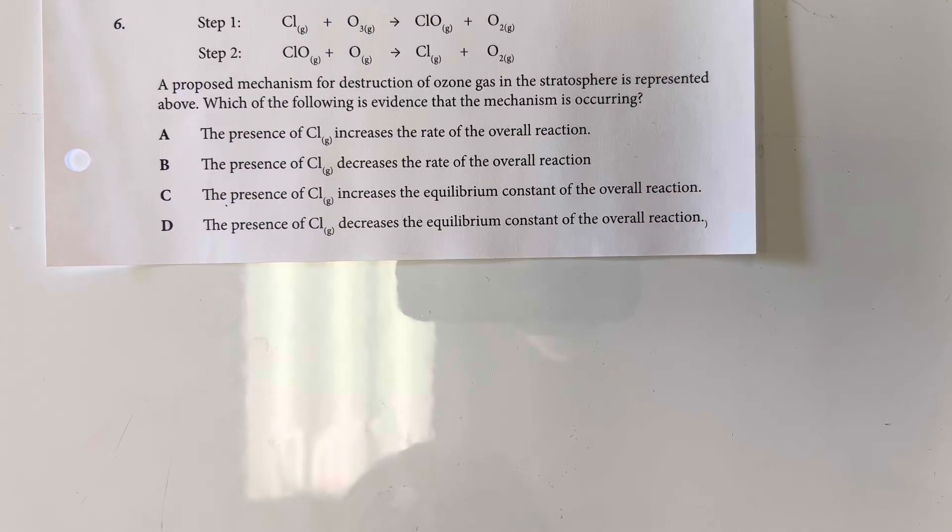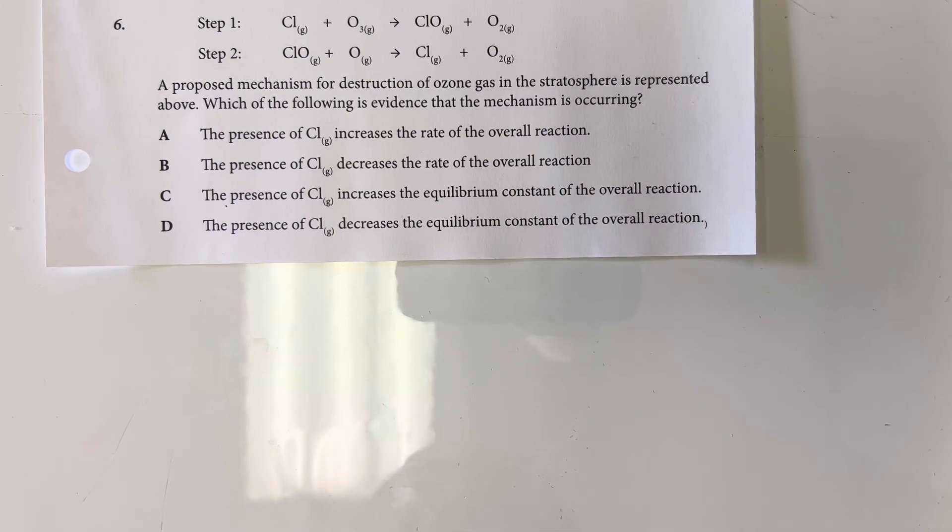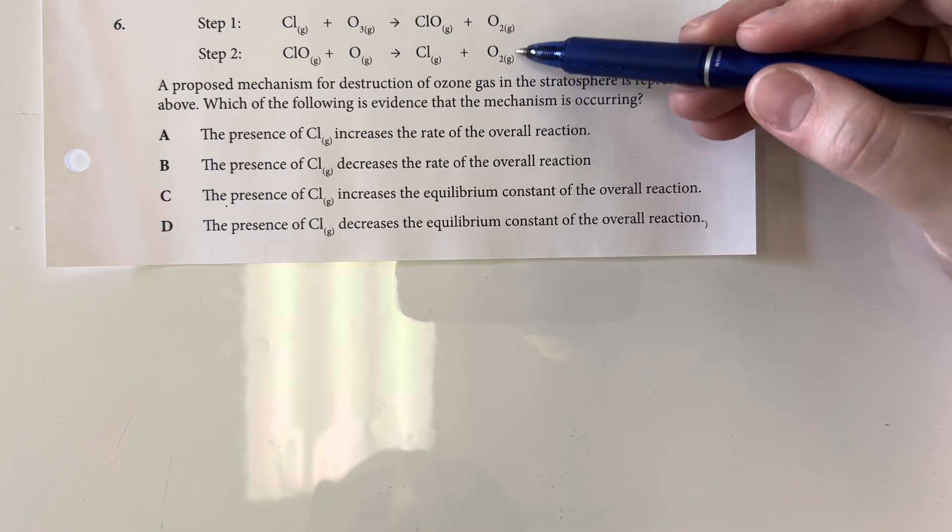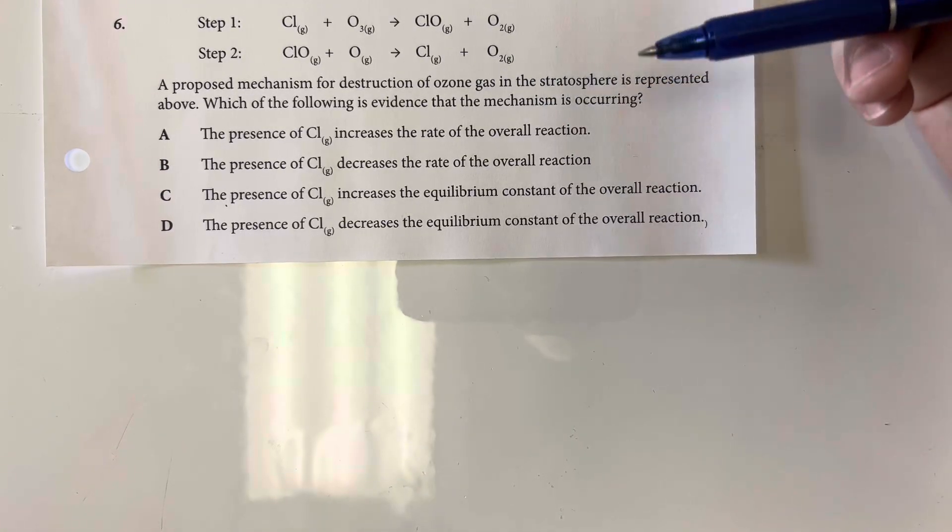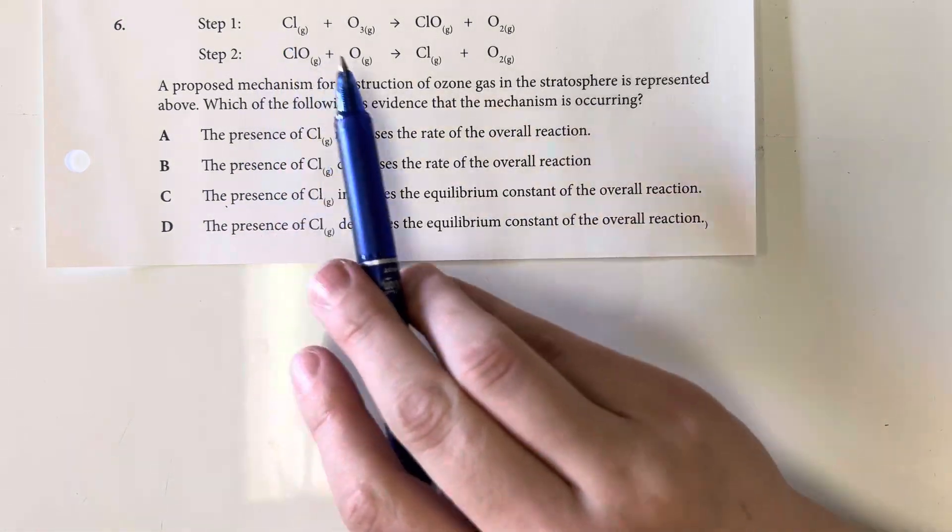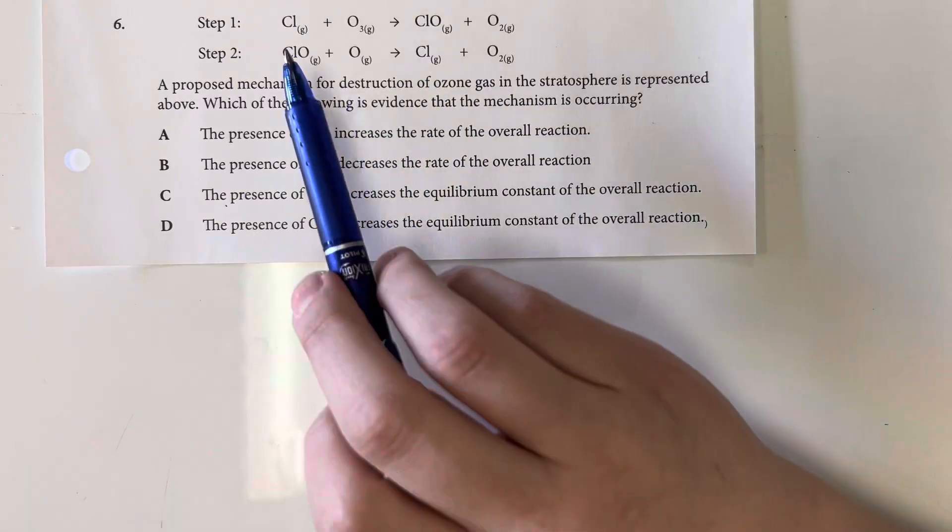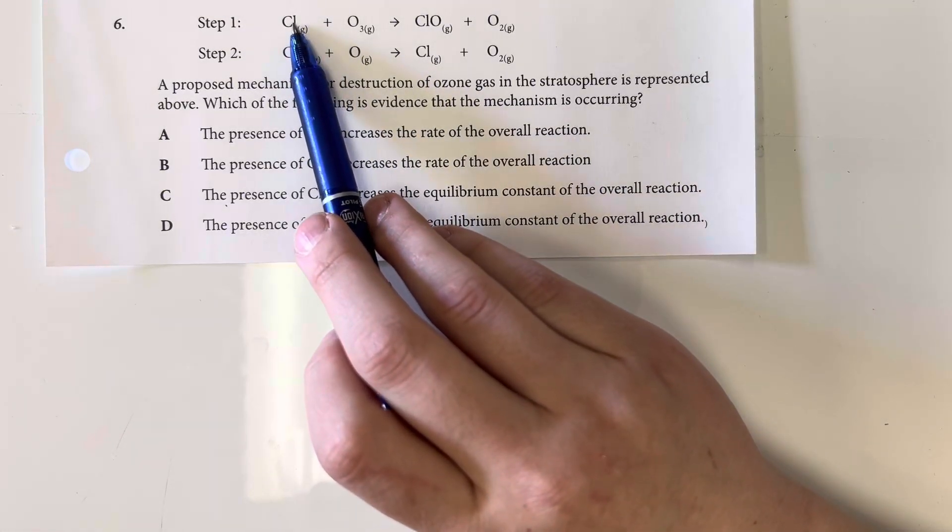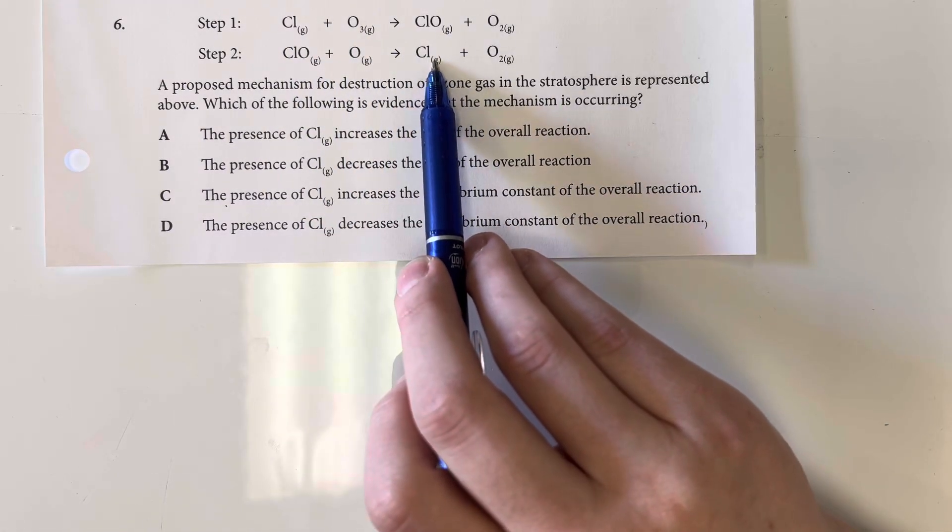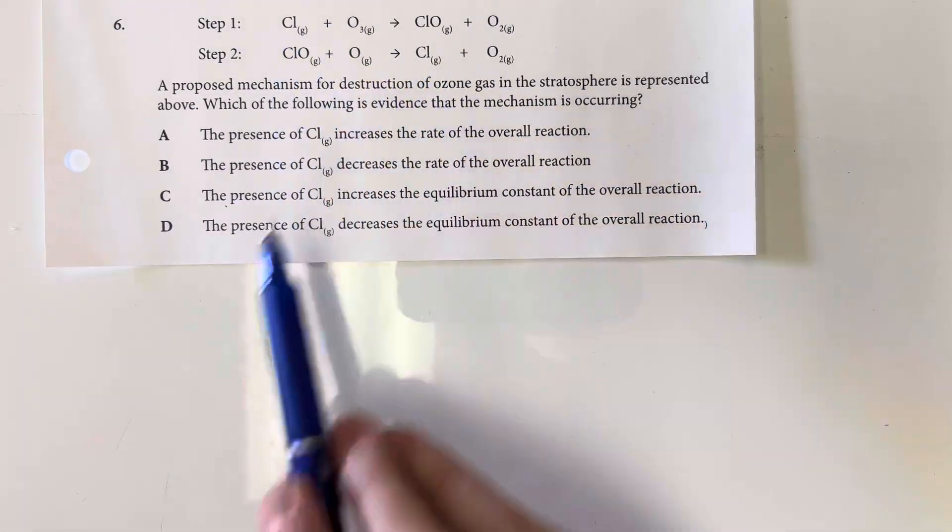A proposed mechanism for the destruction of ozone gas in the stratosphere is represented above, which of the following is evidence that the mechanism is occurring. So something that would show that this mechanism is occurring, something that would show that this is something that happens. We are looking at chlorine being a catalyst here, since it is in the reactants portion of step one and in the products portion of step two, which means it is a catalyst.